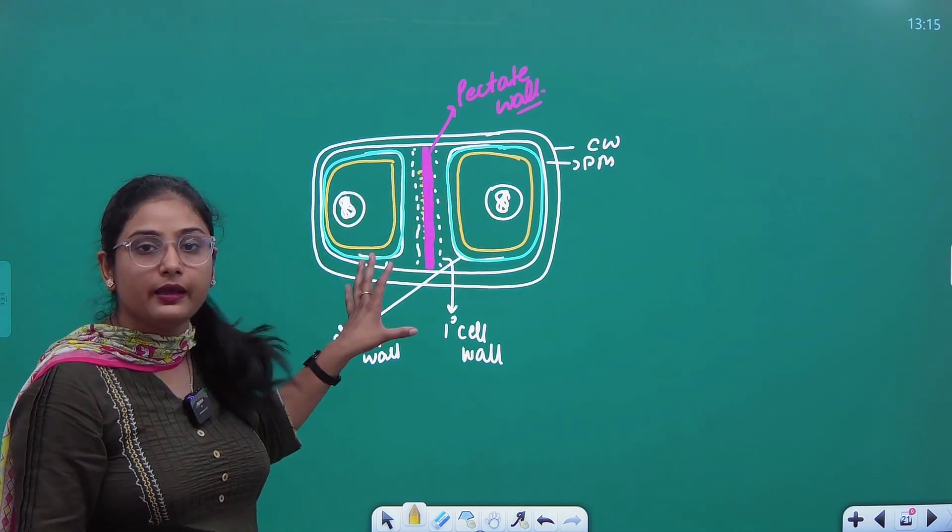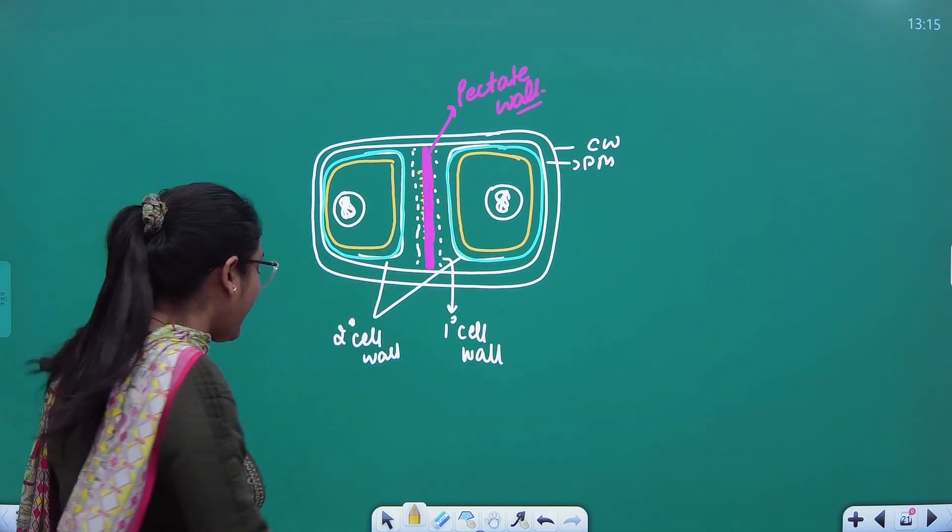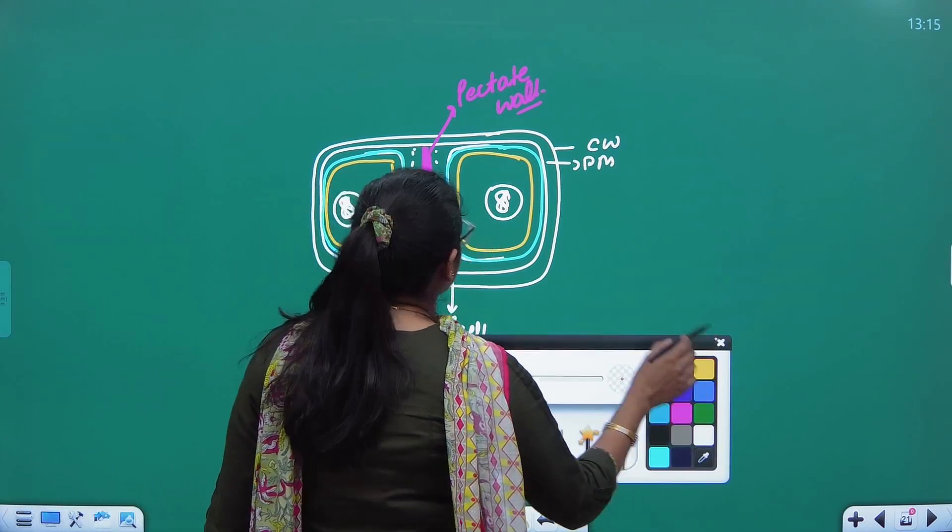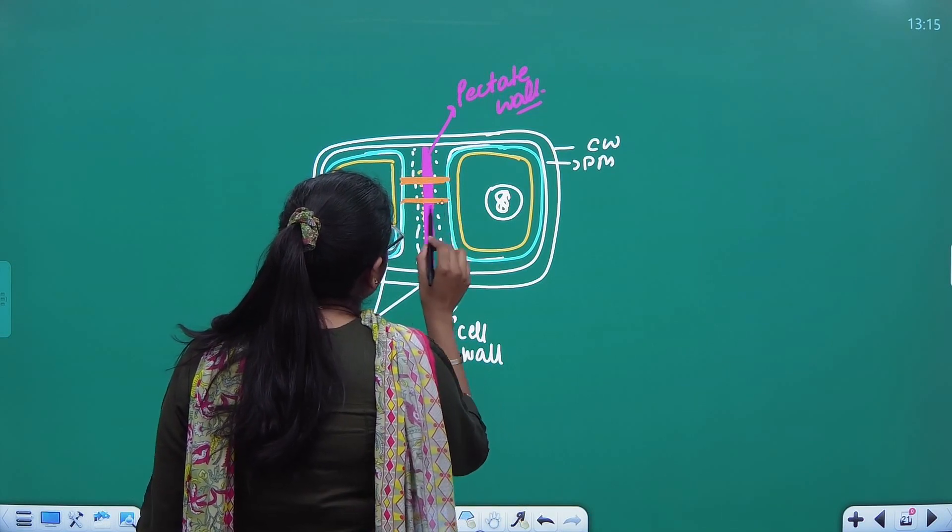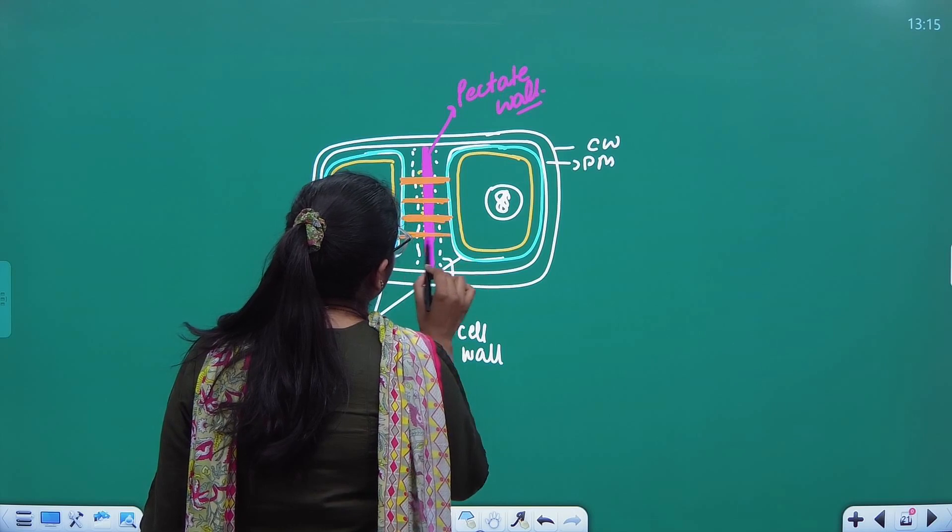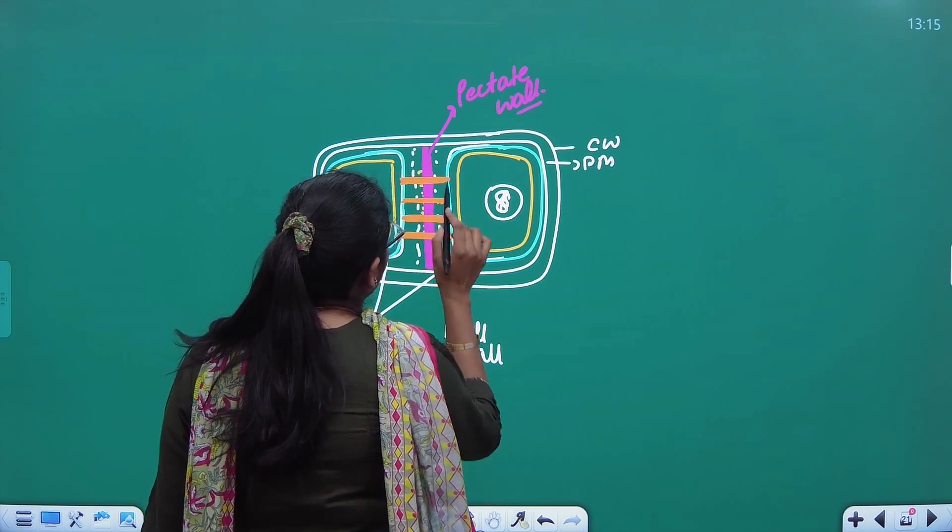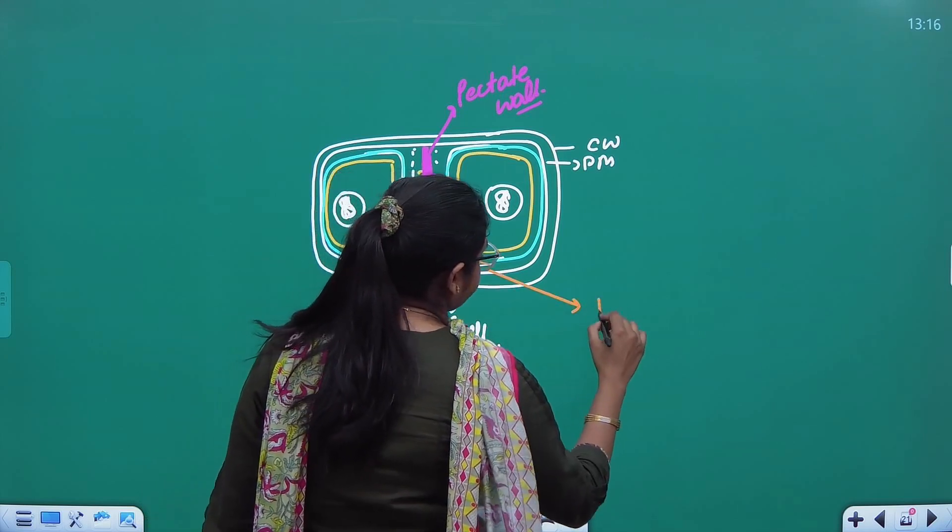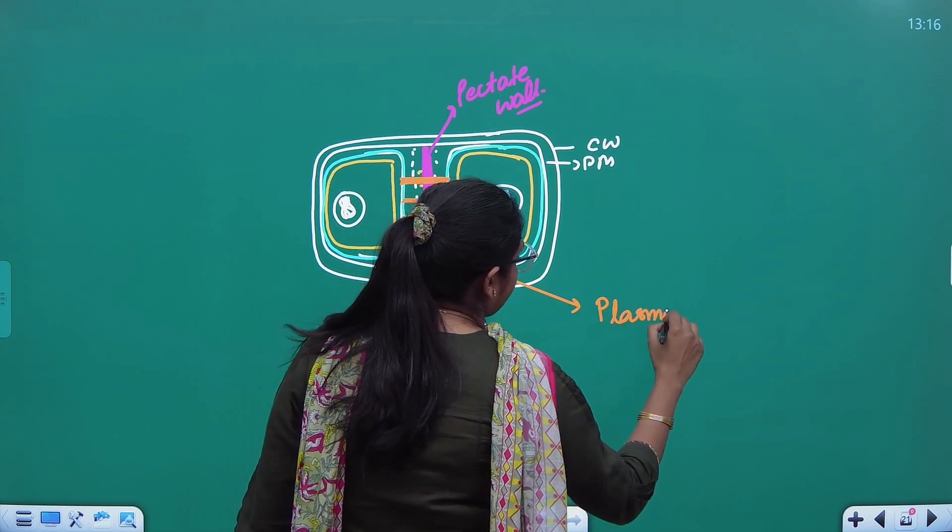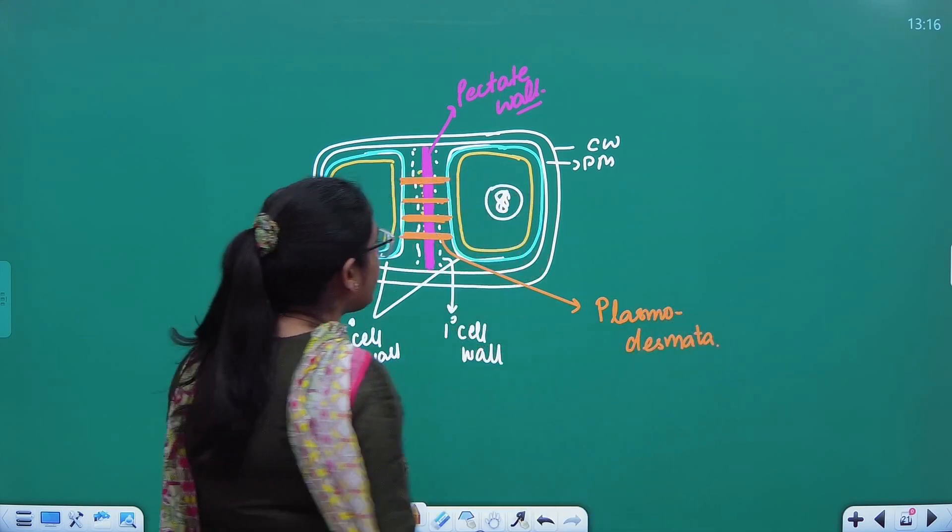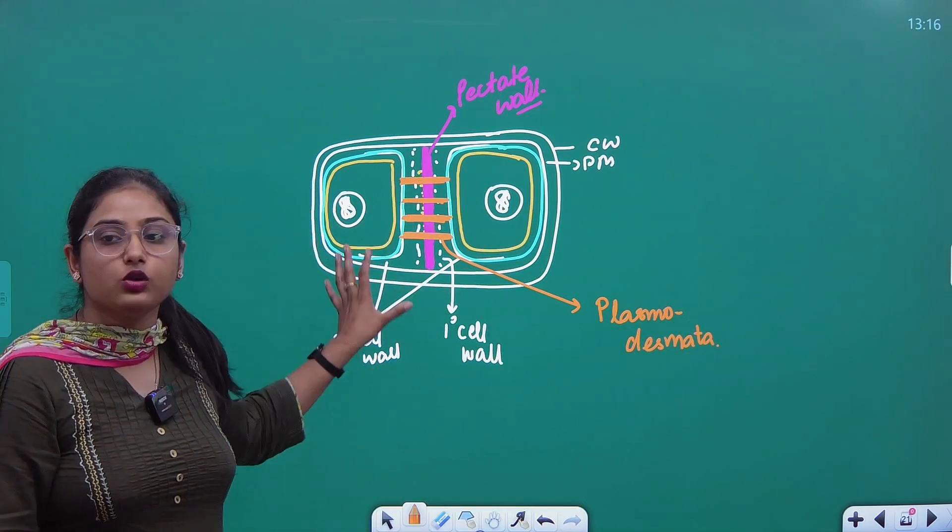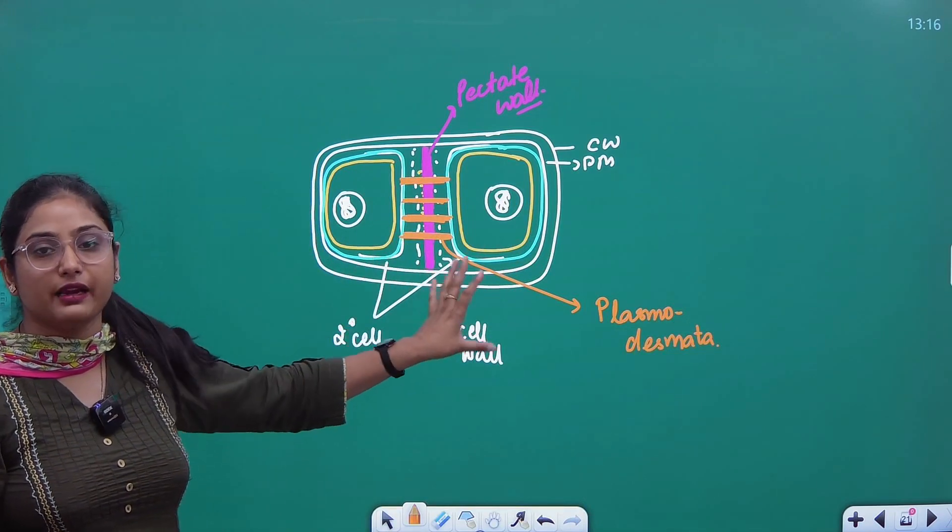So, these two cells are made. And if we interact with these two cells, we call them channels, plasmodesmata, which cross the pectate wall and the primary cell wall between the two cells. In this way, the cells are made from one cell into two cells.